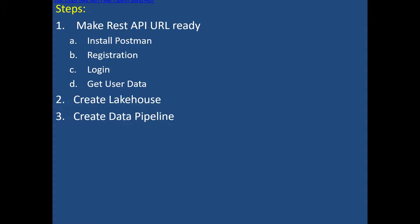To get the REST API URL ready for user data as a response, we need to do four things. First, install the Postman tool, which is used to send requests to the REST API and see the response — mainly used for testing. We don't develop the REST API ourselves; there's a separate development team for that. So I want to use an online registry page. To use it, I need to: register, log in, and then use the URL to get user data with the login credentials.